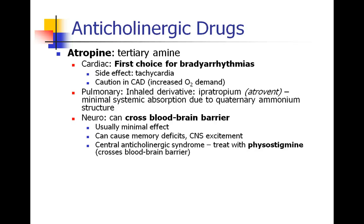Atropine when injected is a tertiary amine and uncharged, which means it can cross the blood-brain barrier. Usually the effect is minimal, but atropine can cause memory deficits, disorientation, or other CNS excitement, and can even lead to central anticholinergic syndrome, which is treated with physostigmine — similar to neostigmine but it crosses the blood-brain barrier.